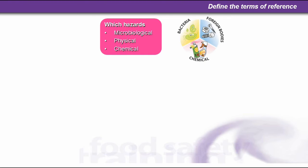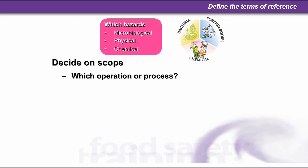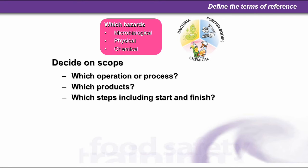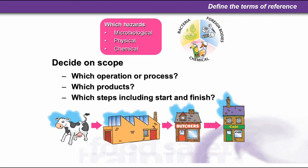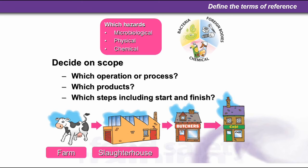When defining the terms of reference, you need to decide which hazards are applicable to your system: microbiological, physical, or chemical — some or all of them. Decide on the scope: which operation or process you're going to introduce HACCP into, which products will be part of the HACCP system, and which steps to include — the start and finish. For example, it might be on the farm, in the slaughterhouse, in the butcher's, at the end customer such as a café, or a combination of all four.